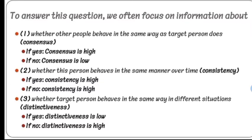When other people behave in the same way as the target person — the target person being the one we are talking about — if other people do not behave the same way as the target person, then consensus is low. If they do behave the same way, then consensus is high.